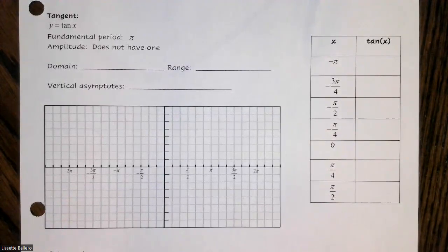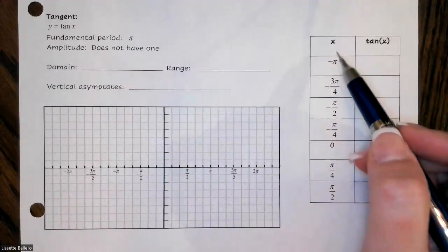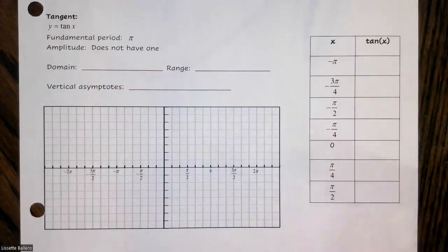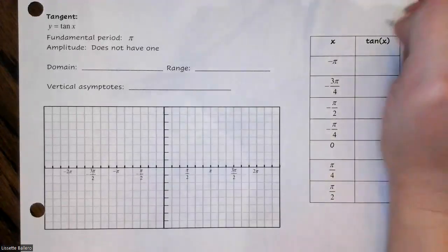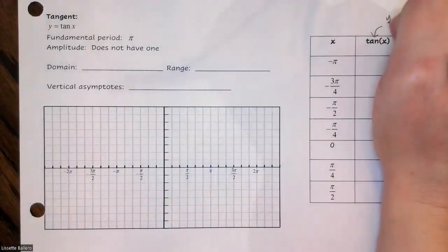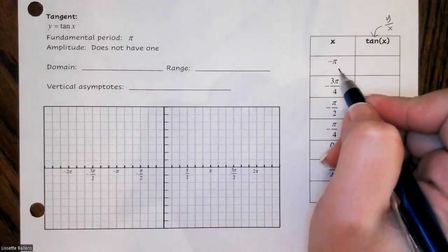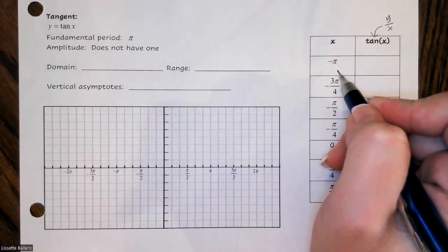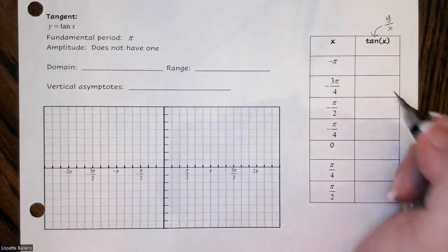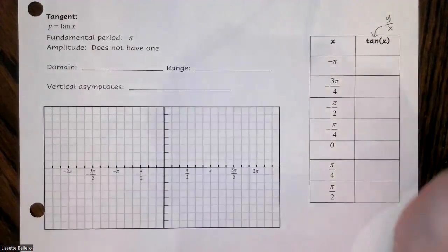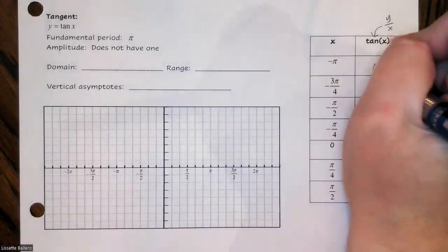We'll start by getting a table of values. There's that unit circle again — make sure that you know it. Our x values are chosen to be convenient for graphing. Remember that tangent is the y value over the x value on the unit circle. So at negative π, y is zero and x is negative one, and zero divided by anything is zero.